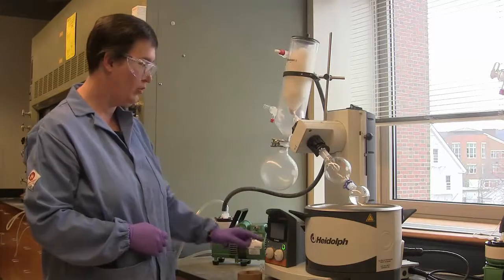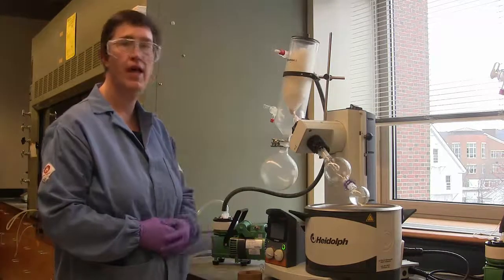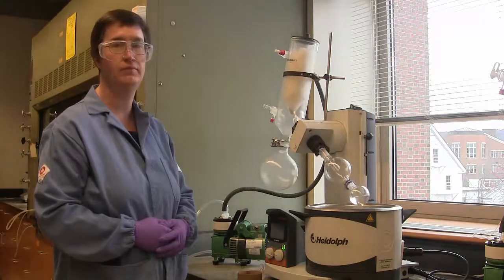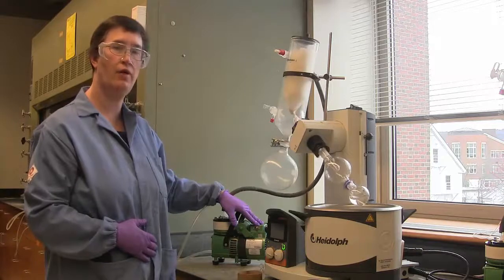To get started, I'm going to adjust the spin knob so that my flask is rotating in its fastest setting. After that, I will turn on the vacuum pump, which is my source of vacuum for the rotary evaporator.